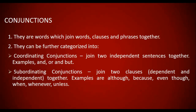A subordinating conjunction joins a dependent clause with an independent clause. For example: 'Although I was a bit lazy, I managed to attend the class.' 'Although' is the subordinating conjunction — it makes 'although I was a bit lazy' a dependent clause that cannot stand alone. It must be attached to the independent clause. Common subordinating conjunctions include: although, because, even though, when, whenever, unless — and many more.